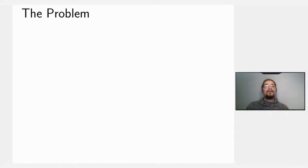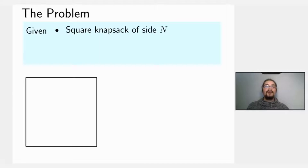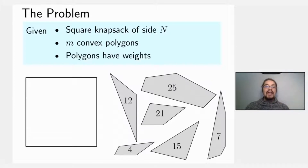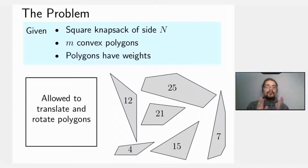In this problem we are given a square knapsack of side n where n is an integer. We are also given m convex polygons which have vertices with integer coordinates, and these polygons have some weight associated to them. We are also allowed to translate and rotate these polygons as we see fit.